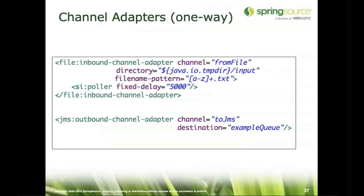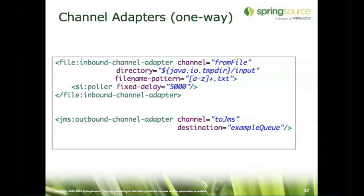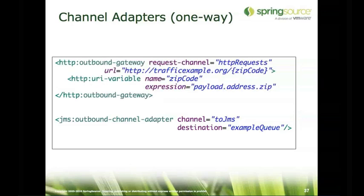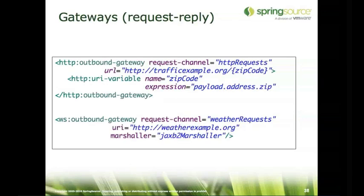All of these adapters are going to be similar when you configure them. If it's a polling adapter - like the file version shown here - then it will have a poller sub-element. If it's event-driven then you won't see that sub-element, but everything downstream from it will be event-driven. Whatever subscribes to the from-file channel is going to receive these file instances as if they were being fired into the system without any polling involved. All the lifecycle, polling, and scheduling code is used by Spring Integration internally so you don't have to. There's also an example of the JMS outbound adapter - a one-way fire-and-forget - and we also have a JMS outbound gateway which does request-reply.